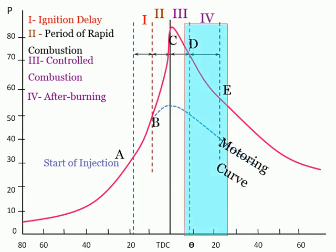Theoretically, it is expected that the combustion process should end after the controlled combustion. However, because of poor distribution of the fuel particles, combustion continues for the remainder of the expansion stroke. This fourth stage of combustion is called after burning.